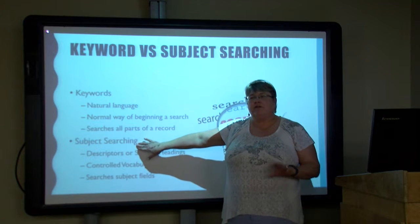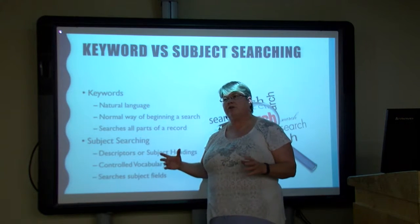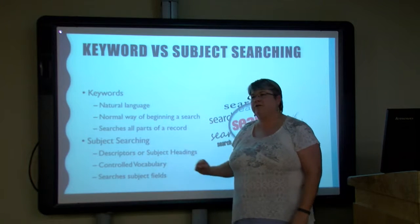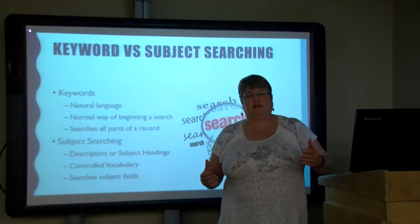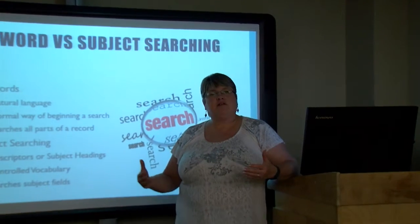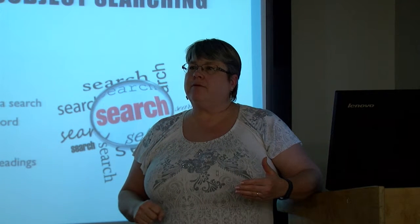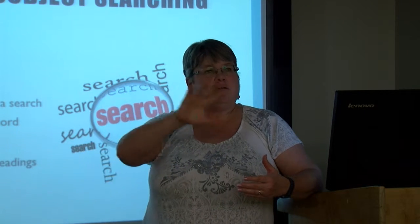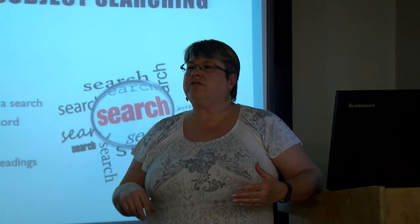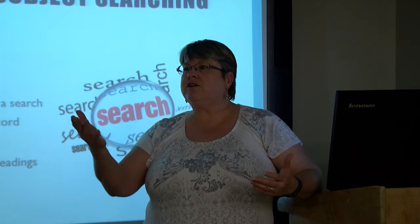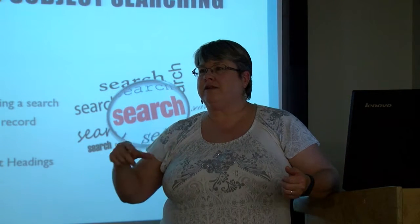A lot of our databases — though Google Scholar would not have this — have what's called subject searching with subject headings. These are called descriptors, identifiers, or subject headings, and they are what we call a controlled vocabulary. When an indexing service is putting articles into a database, somebody looks at those articles and says this article has to do with customer service, or banking, or educational technology. Sometimes they're words we may not even think to use.